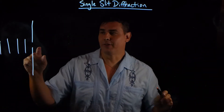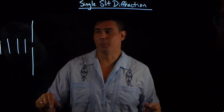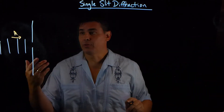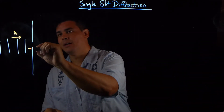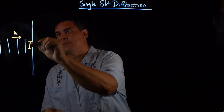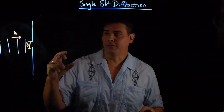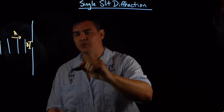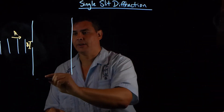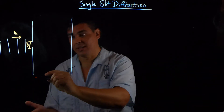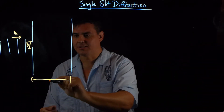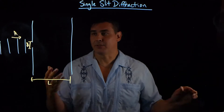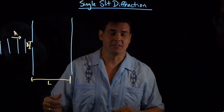Single slit interference is when you have one opening, and we have light of some wavelength traveling through the opening. This opening has a width of D, and I'm going to shine this light on a screen. Just like in double slits, the distance from the slit to the screen is a distance L. So everything looks the same, except there's only one opening instead of two.